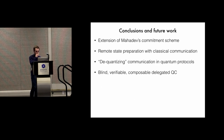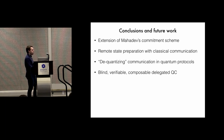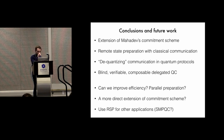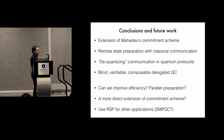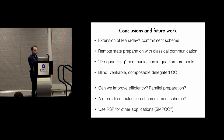To conclude: the main point was to extend Mahadev's commitment scheme to include additional observables, which lets us do remote state preparation — a way of de-quantizing quantum communication in protocols. This lets us obtain a protocol which is blind, verifiable, and composable. As open problems: can we improve efficiency? Can we extend the commitment scheme in a more direct way, where the verifier actually explicitly chooses one of the measurements in the equatorial plane? And because we're de-quantizing quantum communication, another interesting direction would be to apply this technique to other protocols that use quantum communication, such as protocols for secure multi-party quantum computation.